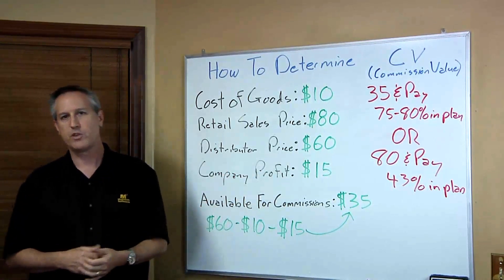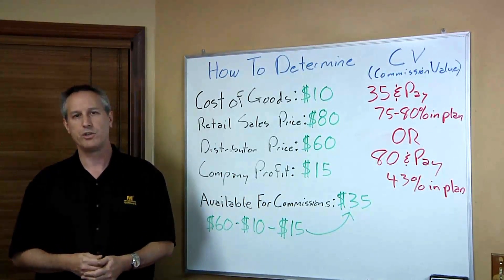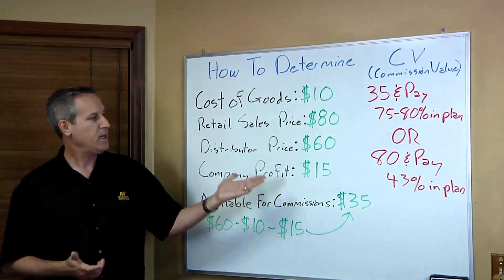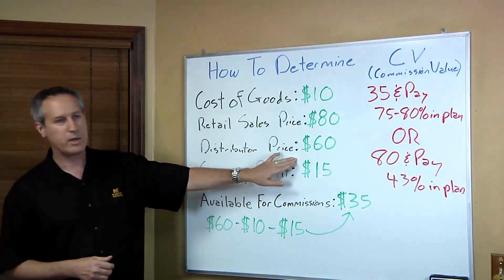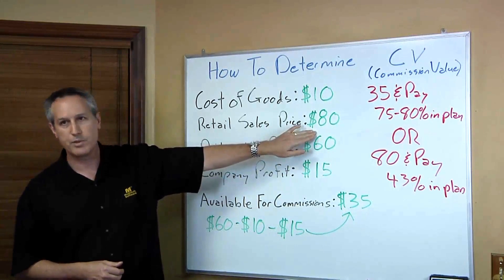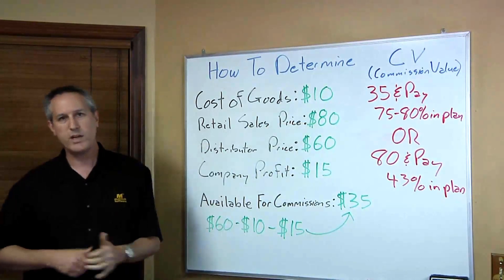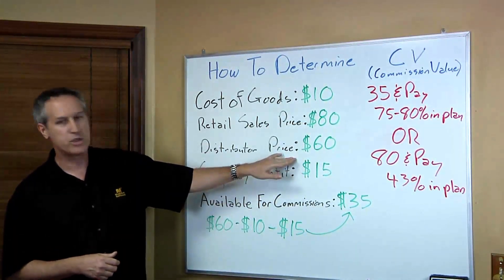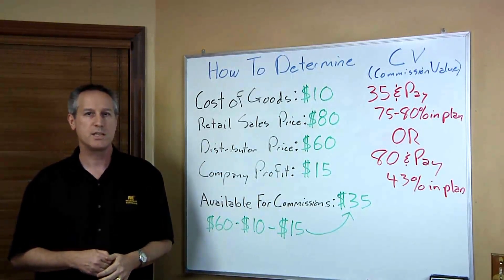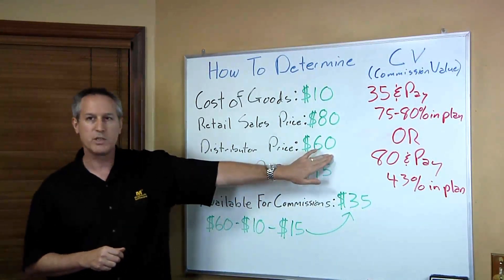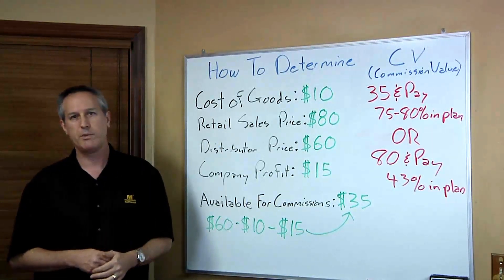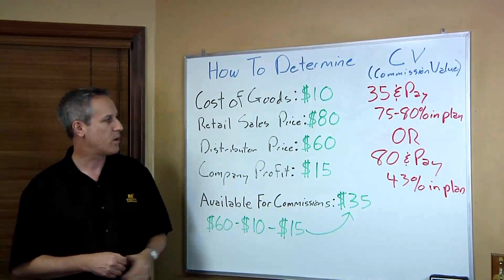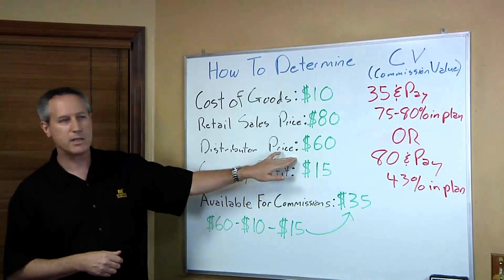Most distributors are focused on joining a multi-level marketing company so they can enjoy the discount offered to distributors. Typically, you're going to offer a 20 to 30% discount to your distributors when they participate in the network marketing opportunity. Here we've offered a 25% discount, so our product retails for $80 and the distributor price is $60. When the distributor sells to a retail customer, they earn the difference between $60 and $80 — that's called a retail sales profit.